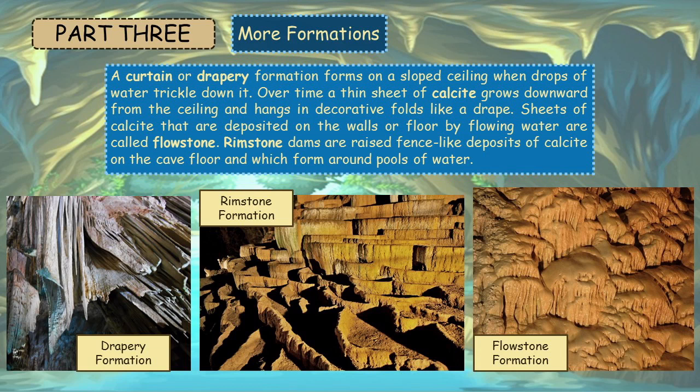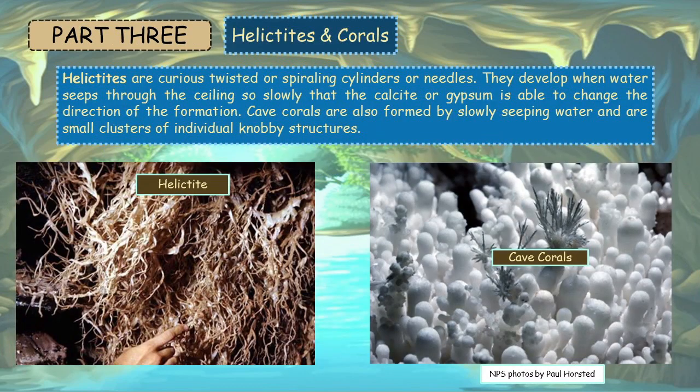Sheets of calcite deposited on the cave floor by flowing water are called flowstone. Rimstone dams are raised, fence-like deposits of calcite on the cave floor which form around pools of water. Helictites are curious twisted or spiraling cylinders or needles. They develop when water seeps through the ceiling so slowly that the calcite or gypsum is able to change the direction of the formation. Cave corals are also formed by slowly seeping water and are small clusters of individual, knobby structures.